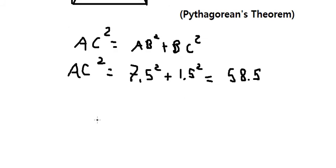Now we put the square root on both sides, and we have AC equals seven-point-six-five.